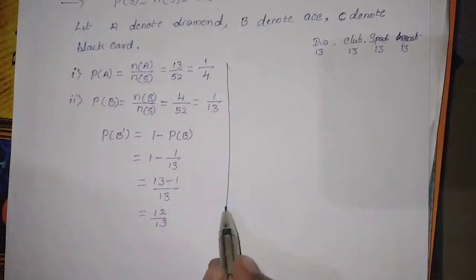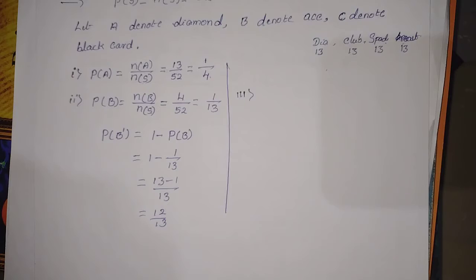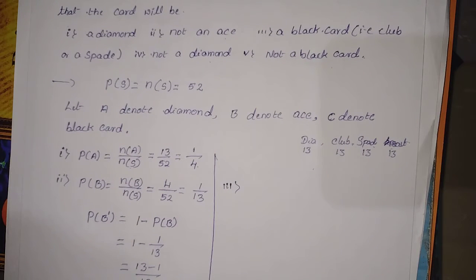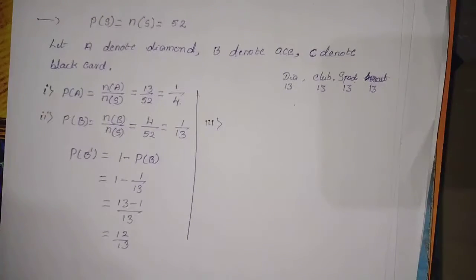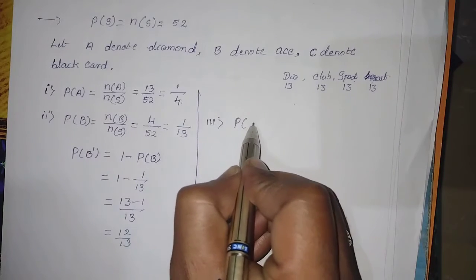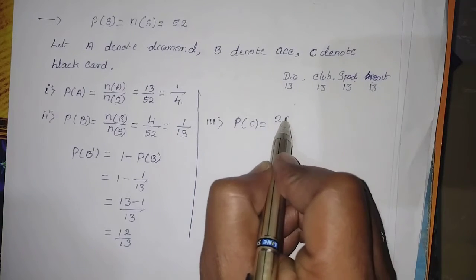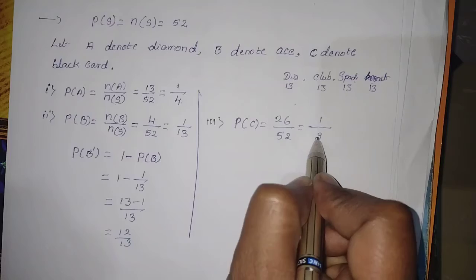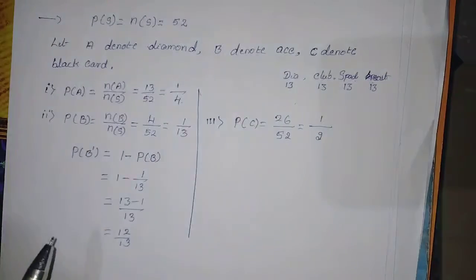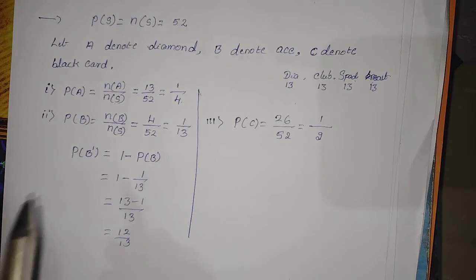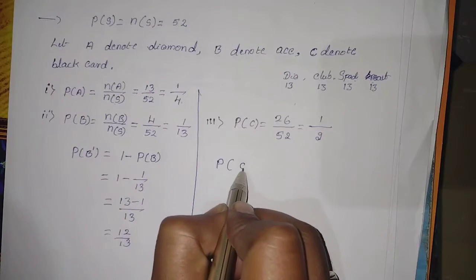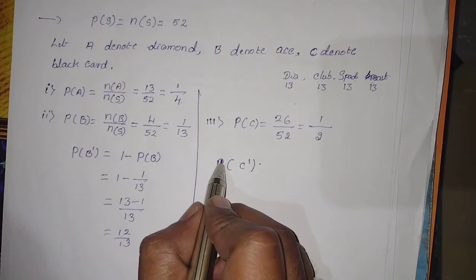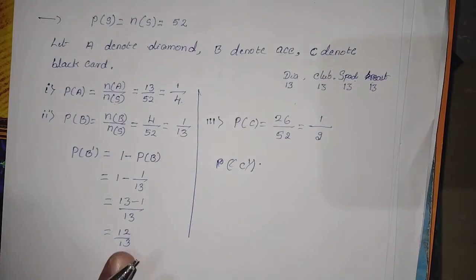The third sub-question asks for a black card, that is, a club or spade card. Let C denote a black card. There are 26 black cards out of 52, so P(C) = 26/52 = 1/2. This accounts for both club and spade cards combined.